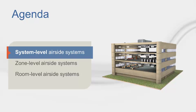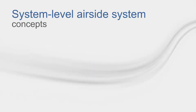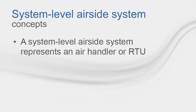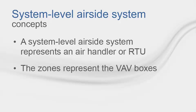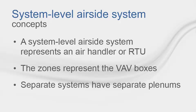There are three levels of air side systems. We will start by covering the system level air side system. For system level air side systems, the system represents an air handler or an RTU. The zones underneath the system represent VAV boxes, and separate systems have separate plenums. Let's run through a couple of example scenarios so you can see what TRACE is doing compared to the real world.